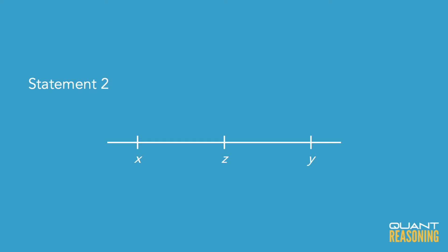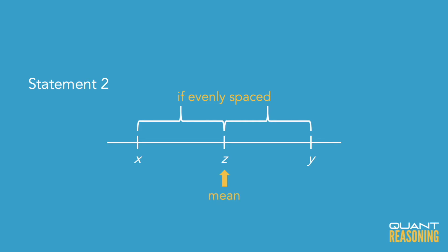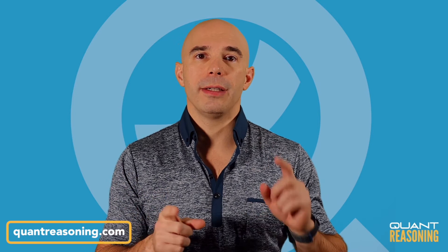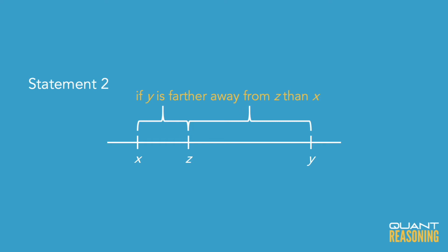So under what circumstances would that average — that magical point — be to the right of z? Well, it would be at z if it's a symmetrical set. If these are evenly spaced numbers, then the average would be exactly at z. But if y is farther away from z than x is, then the average would have to move to the right and it would be greater than z.